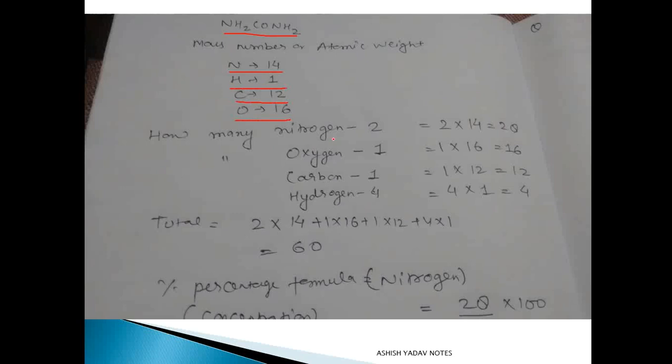Nitrogen atomic weight is 14, hydrogen is 1, carbon is 12, and oxygen is 16. So how many nitrogen atoms are in urea? That is two. How many oxygen atoms? One. How many carbon atoms? One. And hydrogen atoms.